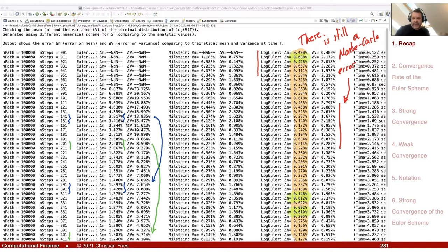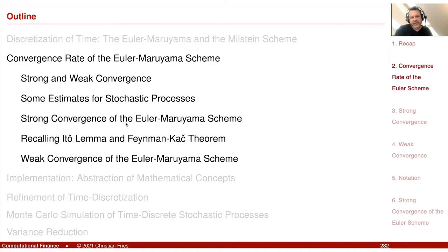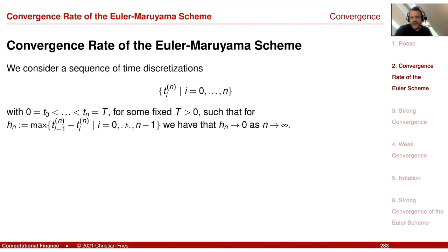We have a guess that this scheme converges like one over n, and now I would like to prove convergence. So we have a session on the convergence rate of the Euler scheme. We will prove two different types of convergence: strong convergence and weak convergence. Before defining what strong and weak convergence are, let us ask in what sense this scheme approximates — converges to — the true solution.